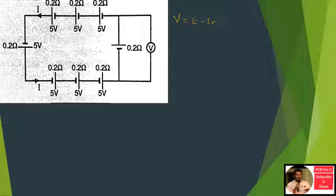Current through each cell I is equal to Ne divided by Nr. That is number of cells, which is equal to 8.